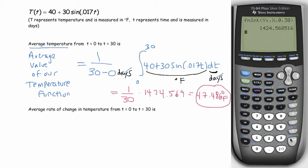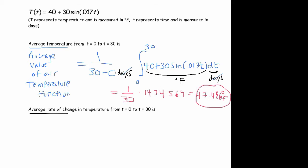Now if we're asked for the average rate of change, here's where you're actually going to use the slope of the secant line. That's just change in my temperature function on the interval 0 to 30.